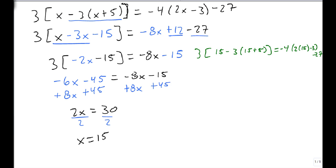3 times 15 minus 3 times 15 plus 5 equals minus 4 times 2 times 15 minus 3 minus 27. And the right side is going to clean up real quick here. So now let's do our order of operations. On the left, that means 15 plus 5 is 20. On the right, 2 times 15 is 30. We bring everything else the same.